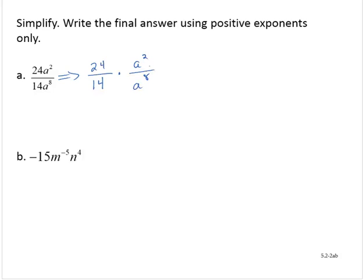24 and 14 have a greatest common factor of 2, so I can divide out that common factor of 2. 24 is 2 times 12, and 14 is 2 times 7. So removing the common factor of 2 gives me 12 over 7.